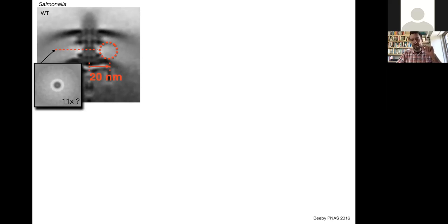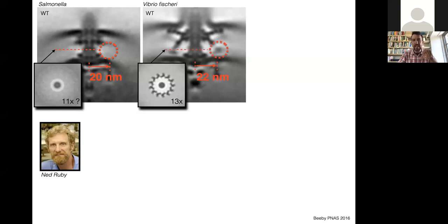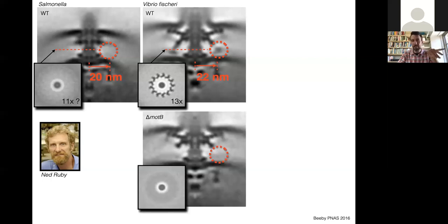There's indirect evidence from biophysicists around the world that there are 11 stator complexes in the Salmonella flagellar motor. We moved on then to the Vibrio fischeri flagellar motors. When we examined it in more detail with our collaborator Ned Ruby, we saw that the C-ring is slightly wider. On top of that, we do see densities where we would expect to see the stator complexes. We thought that these 13-fold symmetries were probably the stator complexes. So we asked Ned to delete those components and we re-imaged them. Indeed, those structures are gone. So we conclude that the Vibrio motor has a slightly wider C-ring and slightly more stator complexes than Salmonella.